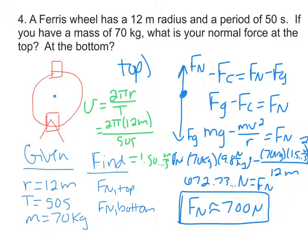If you solve for Fg, so just taking this mg, you're going to get 686 newtons. 672 newtons, again we're looking at the unrounded number here, so 672 newtons is less than 686 newtons. This makes sense because at the top you're going to feel lighter than what your actual weight is.